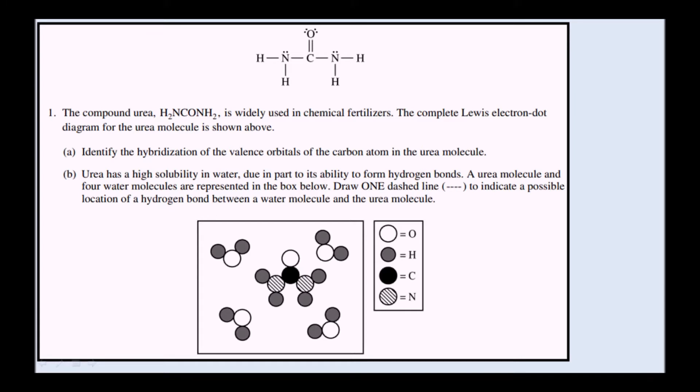Part A: Identify the hybridization of the valence orbitals of the carbon atom in the urea molecule.